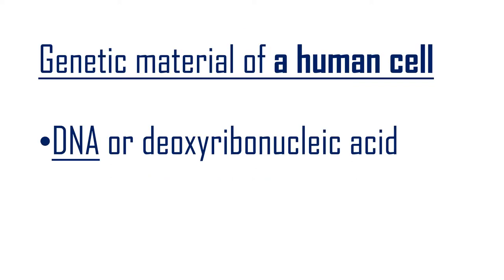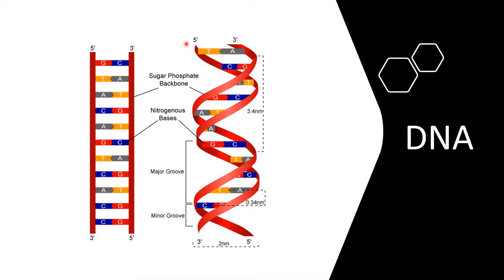The genetic material of a human cell is DNA, or deoxyribonucleic acid. DNA is made of two strands that are linked to each other and wind around each other, resembling a twisted ladder — a shape also known as the double helix structure. Each strand has a backbone made of sugar-phosphate molecules. The sugar molecule in DNA is deoxyribose sugar. Attached to each sugar molecule is one of the four nucleotide bases: adenine, guanine, cytosine, or thymine.